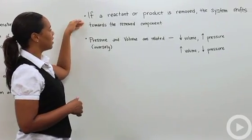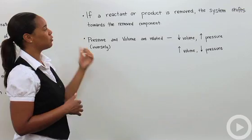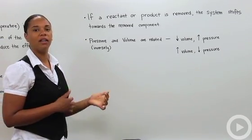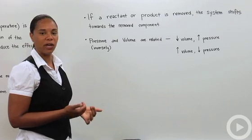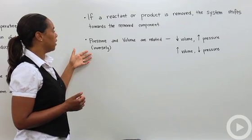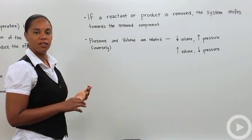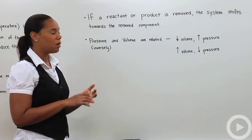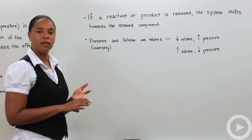So similar to what I just said, if a reactant or product is removed, then the system shifts towards the removed component, again to try to reestablish the equilibrium position. So the changes that are associated with the system that can invoke Le Chatelier's principle are temperature, pressure, and concentration.